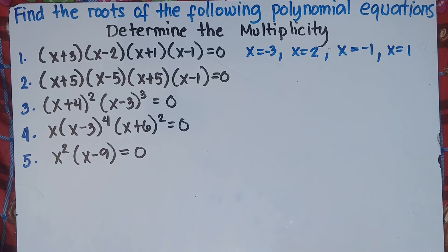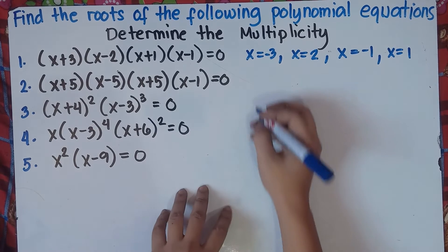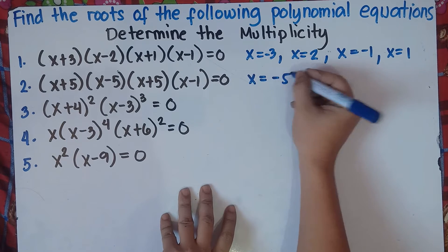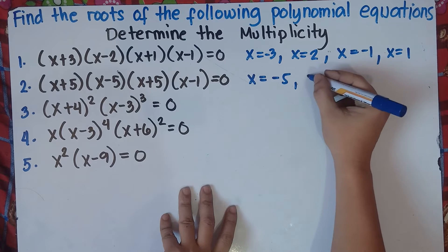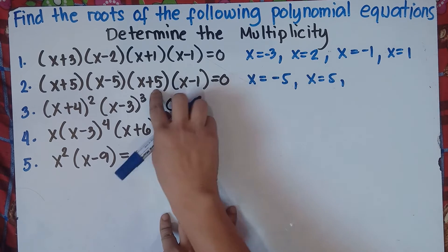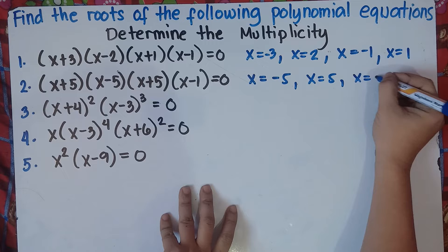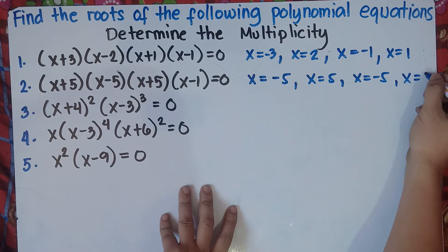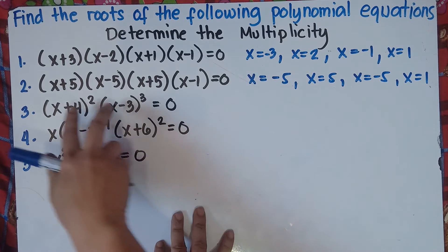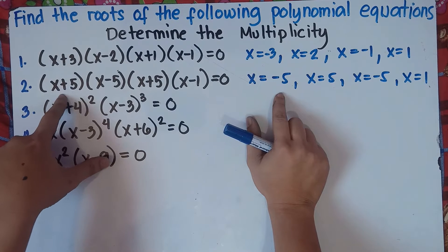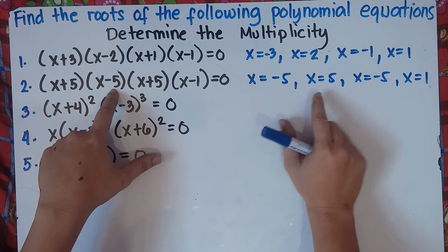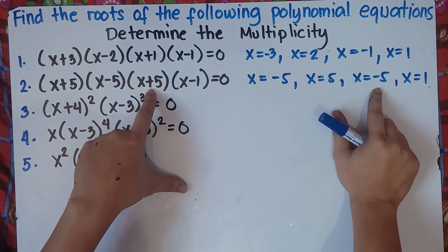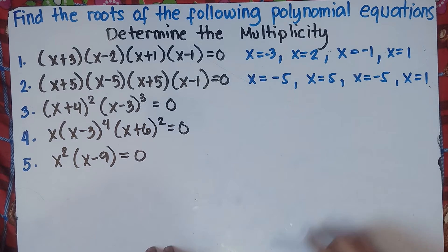Let's try number 2. We have x equals negative 5, then x equals positive 5, then x equals negative 5, then x equals positive 1. So: if this is positive 5, your answer is negative 5; if this is negative 5, your answer is positive 5; if this is positive 5, your answer is negative 5; and negative 1 gives positive 1.